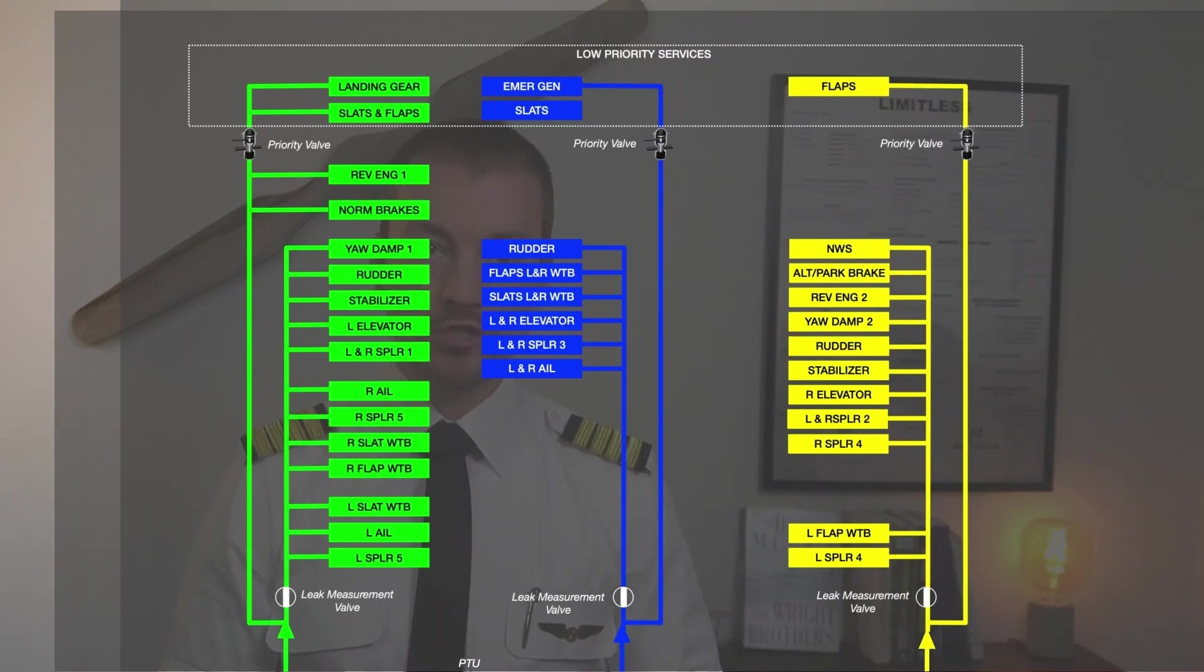What we want to pay close attention to right here is what I mentioned before. Why we start, for example, engine number two first? Well, we need the nose wheel steering, and we need the alternate braking, but most importantly we need the parking brake.